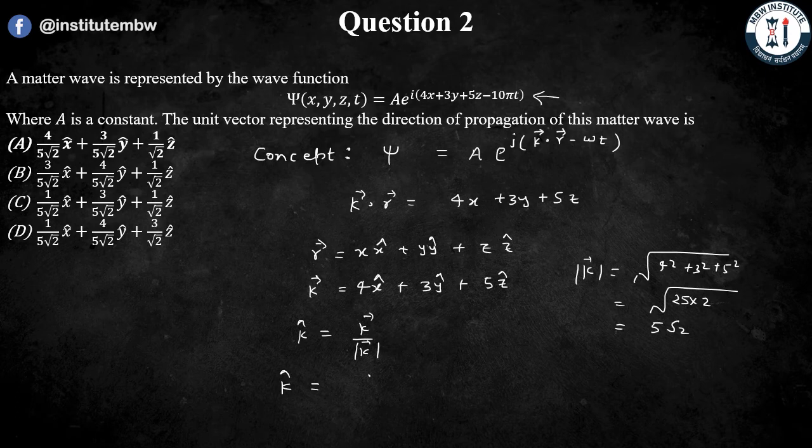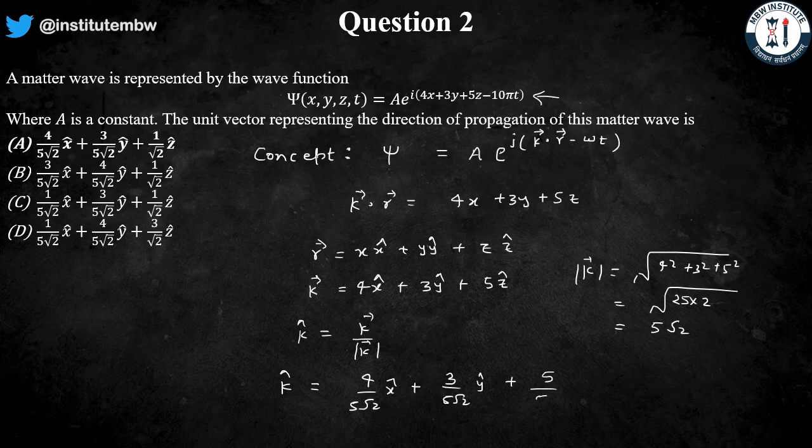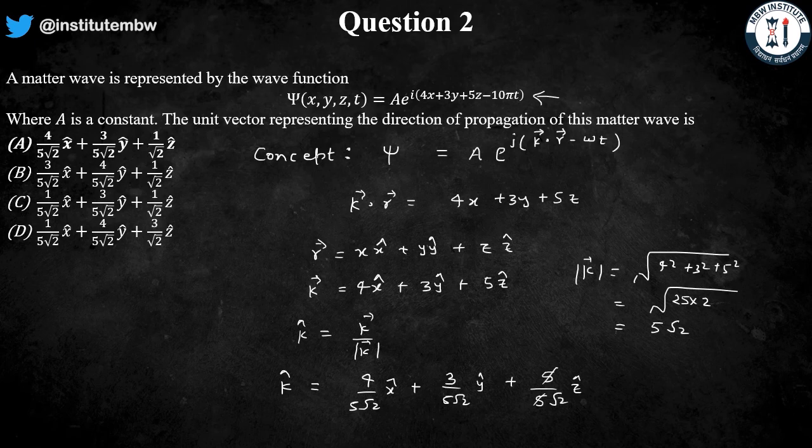So, k̂ will be (4/(5√2)) x̂ + (3/(5√2)) ŷ + (5/(5√2)) ẑ. The 5 will cancel out and it will become 1/√2.